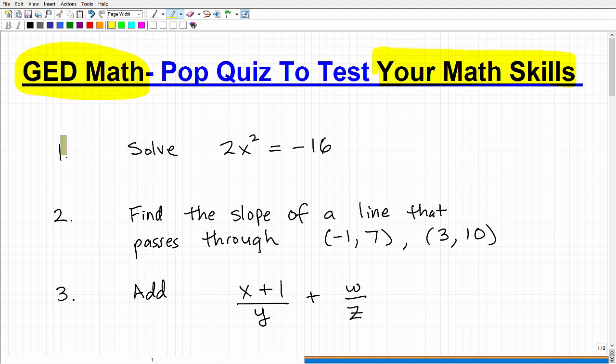Let me go ahead and read the questions to you real quick. The first one is to solve this equation: 2x² = -16. The second is find the slope of a line that passes through the point (-1, 7) and this other point (3, 10). And then the last one is to add these two variable fractions together: (x+1)/y + w/z. What would the sum be? What's another variable expression that's equivalent to this?